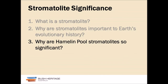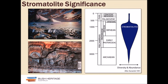Now, why are the stromatolites in Hamlin Pool so significant? Looking at stromatolites through time — first appearing at about 3.7 billion years — they increase in abundance and diversity throughout the rock record. But right before the Cambrian explosion at 542 million years ago, you see a sharp decline, which is a result of higher life evolving.